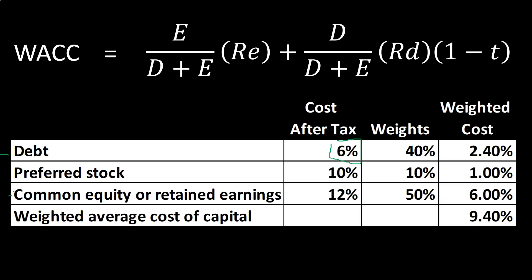The interest we pay is a deduction because it's a business expense, and therefore we have a benefit on the tax side of things. We want to figure this as a percent after we get the tax benefit included — not just the interest rate, but the after-tax rate. That way we can compare it to something like the cost of equity financing and apply it within our current capital structure weighting.